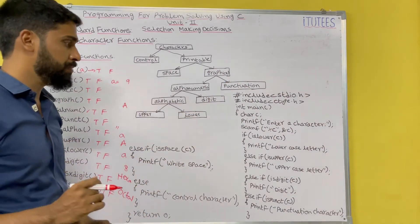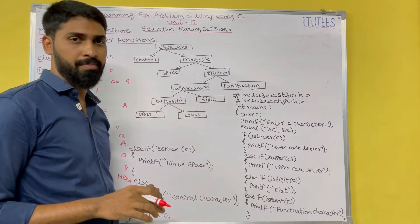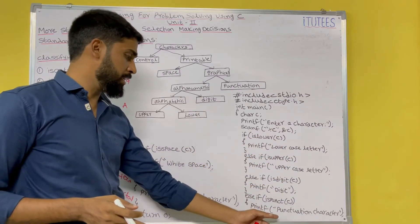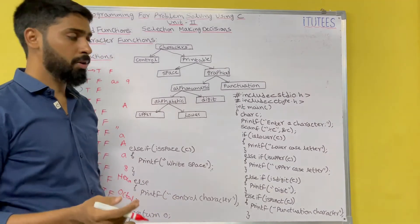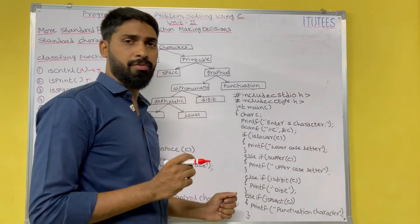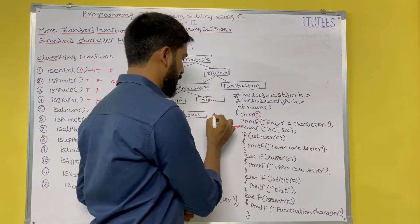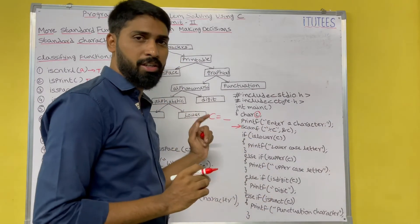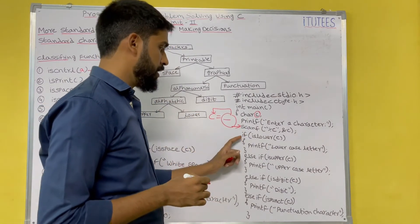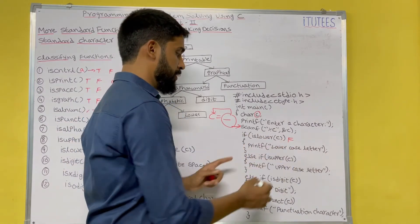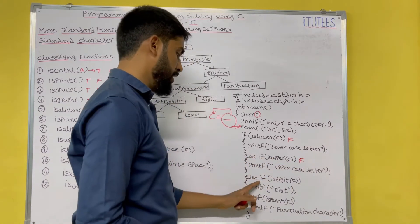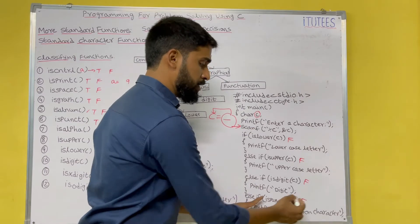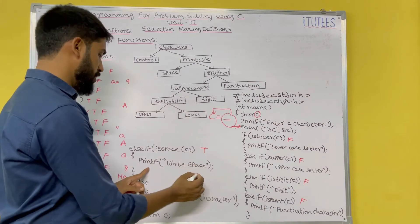Now we are going to see one small example. This program does the following: in your keyboard you press one key, that key is stored in one variable. After that, you check whether you pressed a lowercase letter, or uppercase letter, or digit, or punctuation, or white space, or any other control character. For that, you read one character from the keyboard using scanf, taking variable c. For example, I press white space — the ASCII number is stored in c. Now, if islower(c) returns false, it goes to else. isupper returns false, goes to next else. isdigit returns false, goes to next. ispunct returns false, goes to next else. Here, isspace(c) returns true, so we print white space.